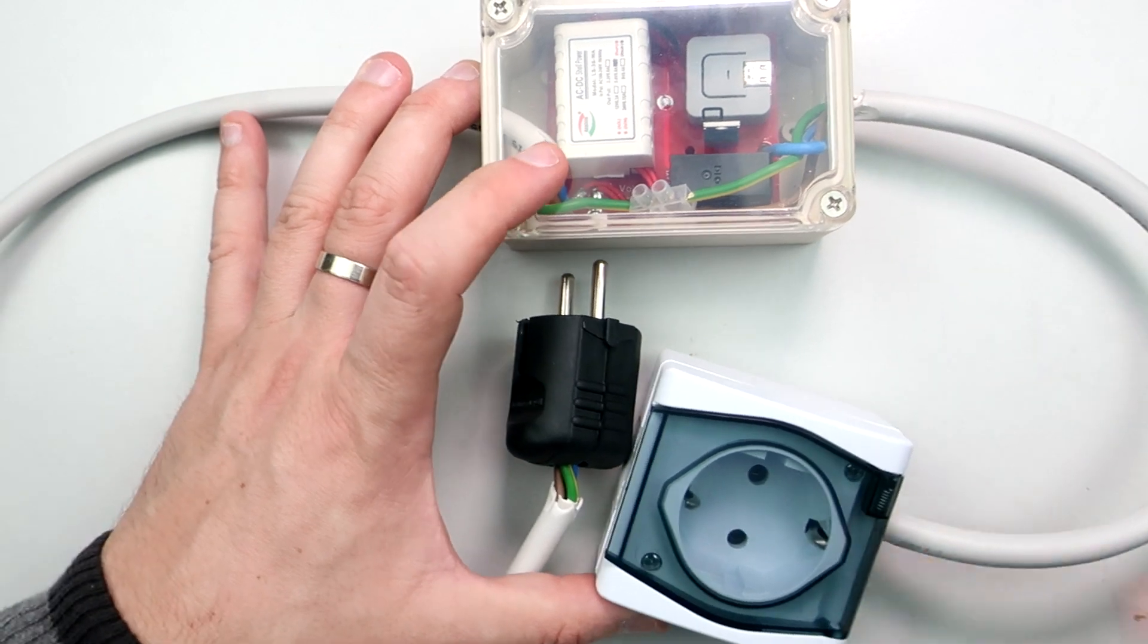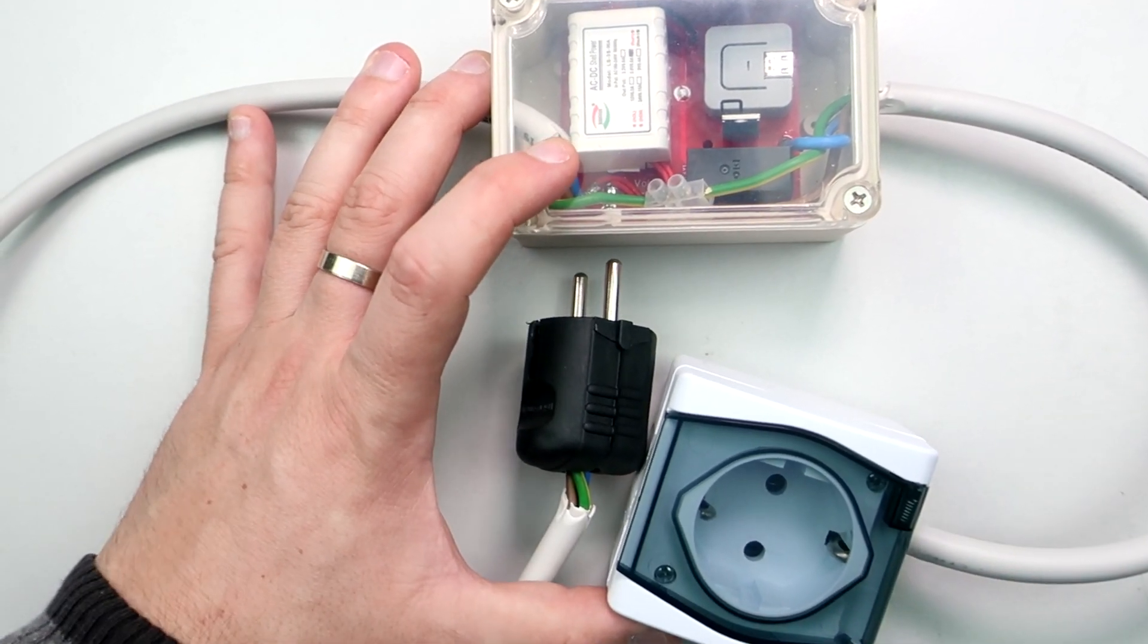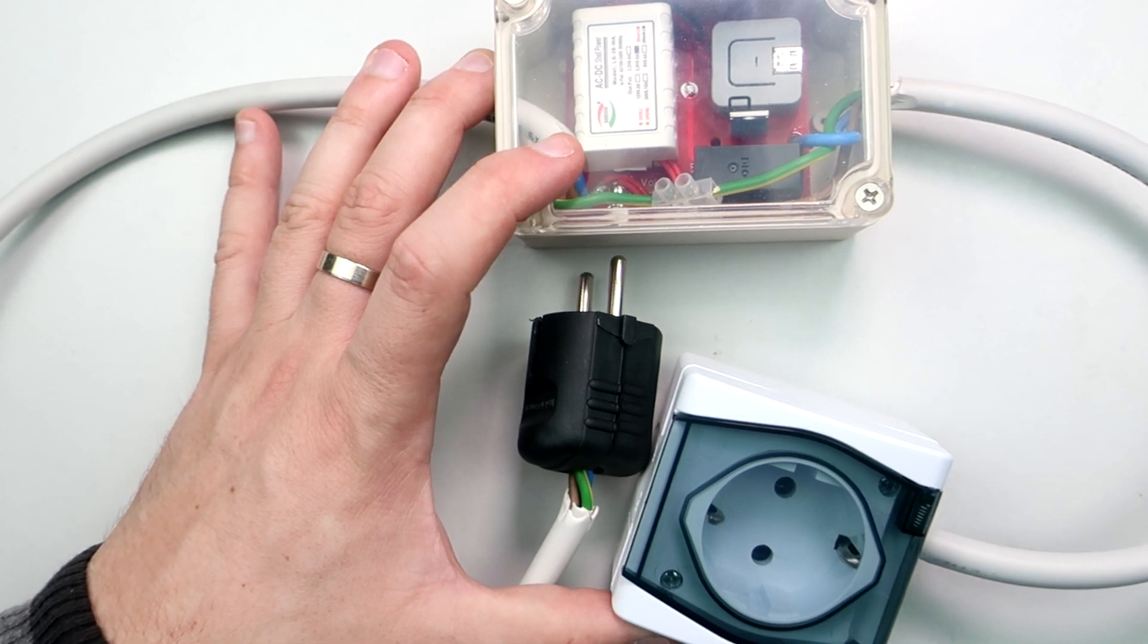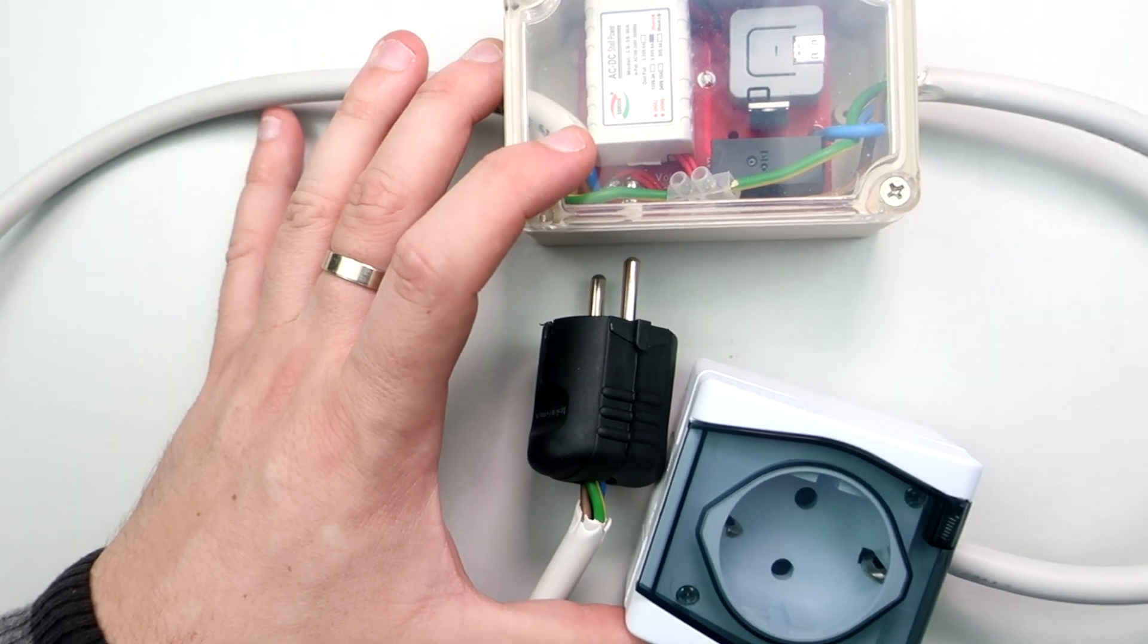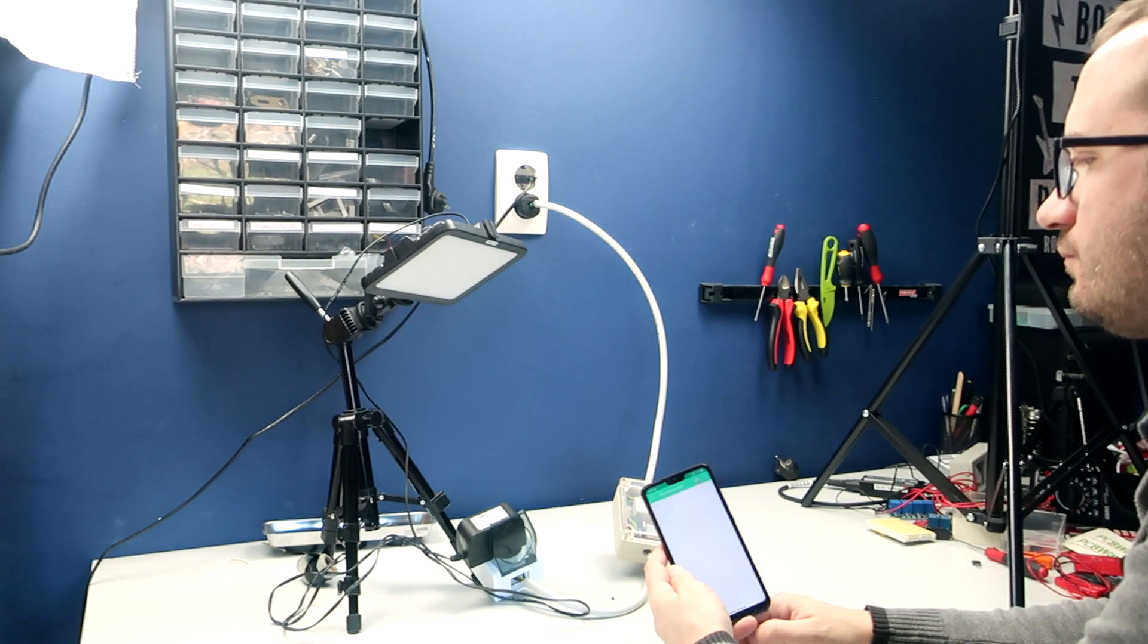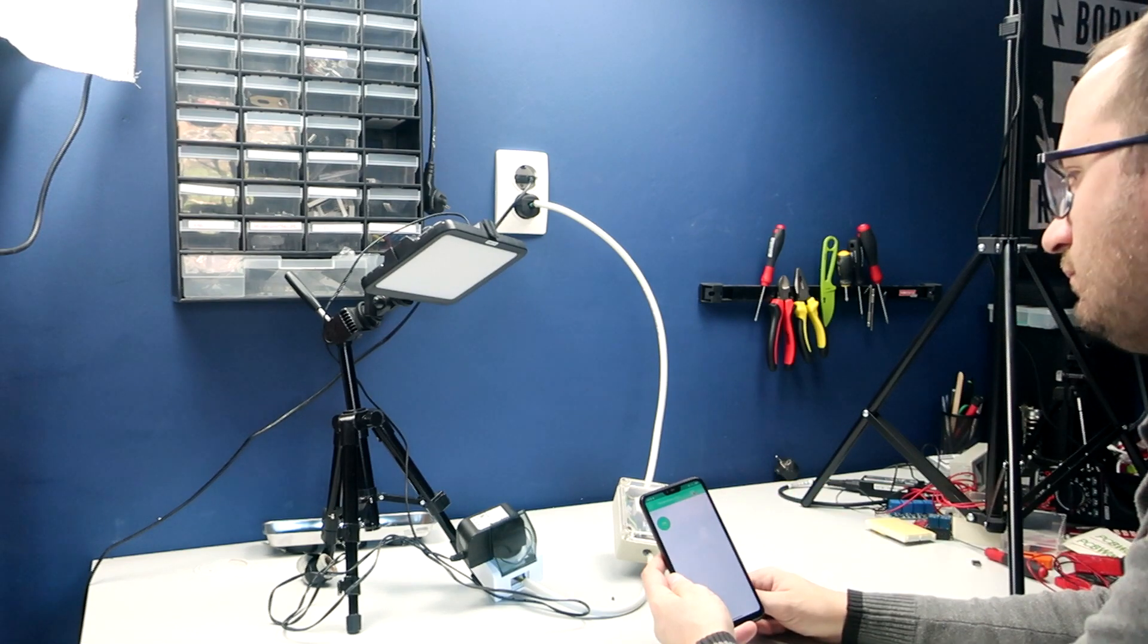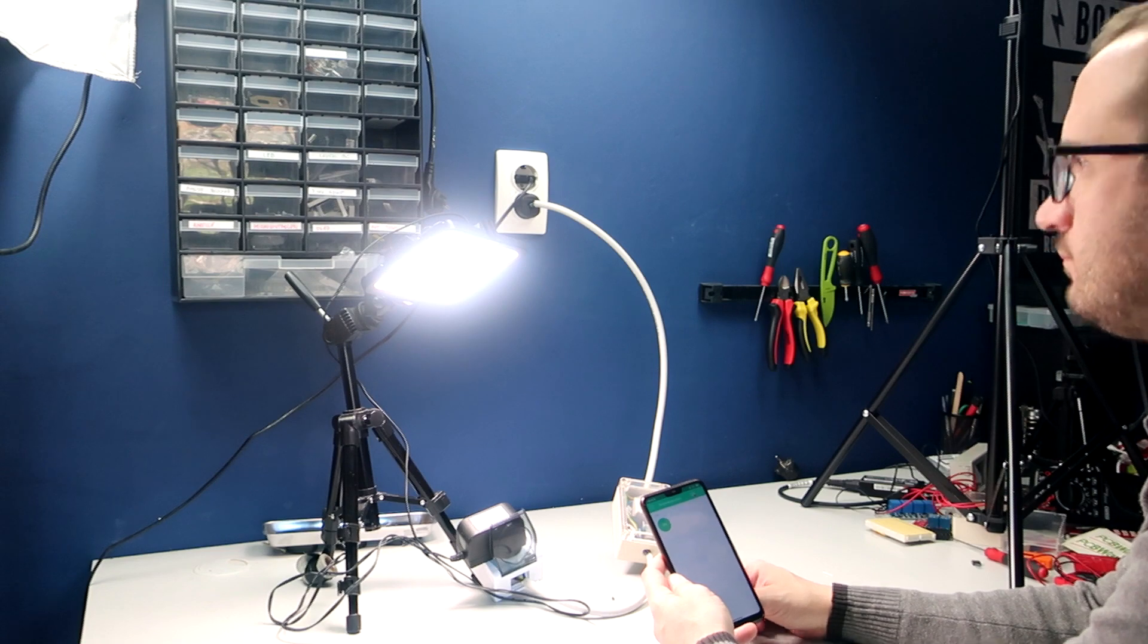In my country, electricity is cheaper at night time, so I will make a program which will automatically turn on or off my heater at specific times, so the heater will work only at night. But I will still be able to turn it on or off with my phone, for example if all hot water is gone during the day.